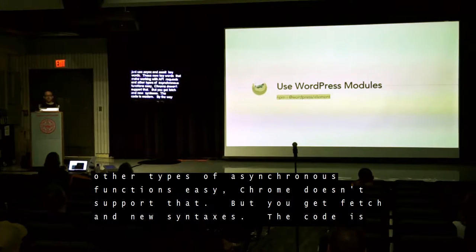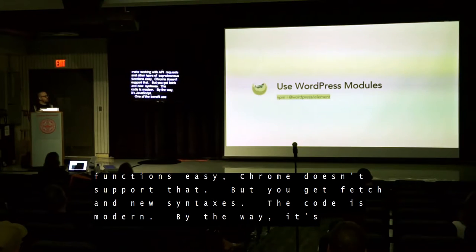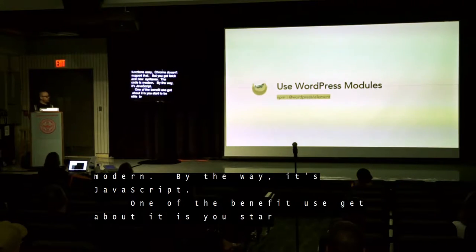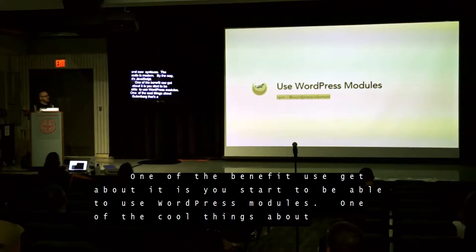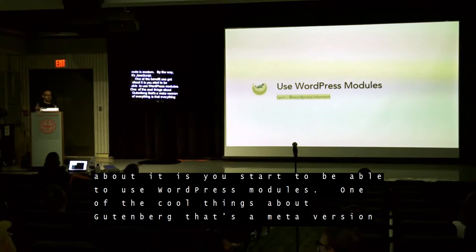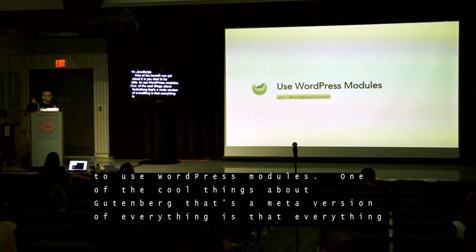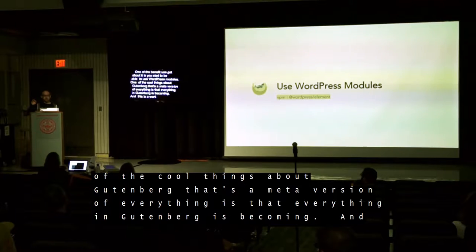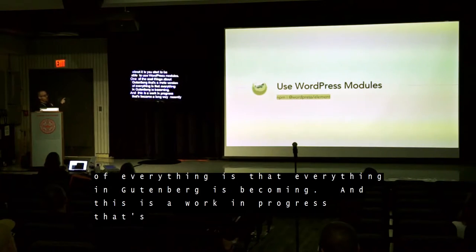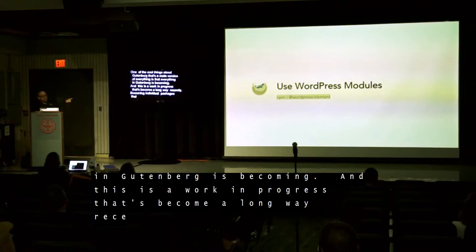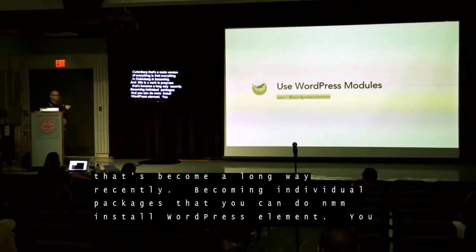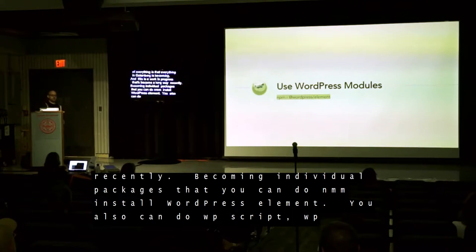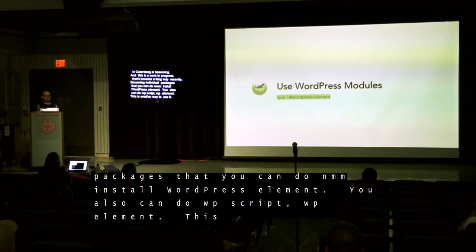One of the benefits you get from that is you start to be able to use WordPress modules. One of the cool things about Gutenberg — a meta version of 'Everything is a Block' — is that everything in Gutenberg is becoming individual packages that you can do `npm install @wordpress/element`. You can also do `wp_enqueue_script('wp-element')`, which is another way to use it, but `wp_enqueue_script` doesn't exist outside of WordPress. NPM exists outside of WordPress.